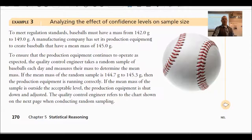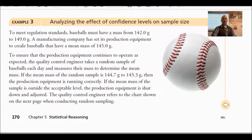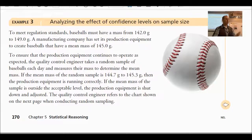Now let's look at example three here. To meet standard regulations, baseballs must have a mass of 142 grams to 149 grams. A manufacturing company sets its production equipment to create baseballs that have a mean mass — an average — of 145 grams. They want to hit right in the middle of that range.